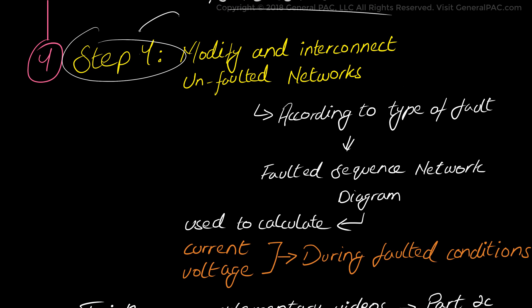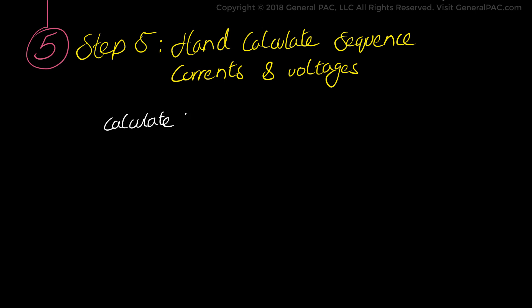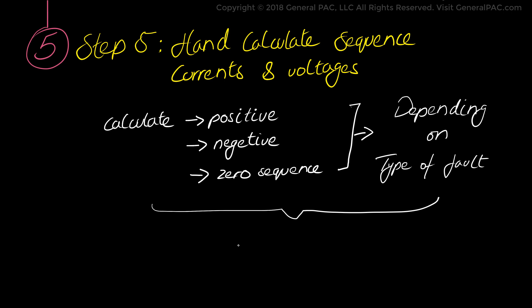Now in step number 5, we will hand calculate the sequence current and voltage quantities during a faulted condition. So we will calculate the positive sequence current, the negative sequence current and the zero sequence current, depending on the type of fault that is involved. And keep in mind that step 5, these current and voltage quantities are per unit values.